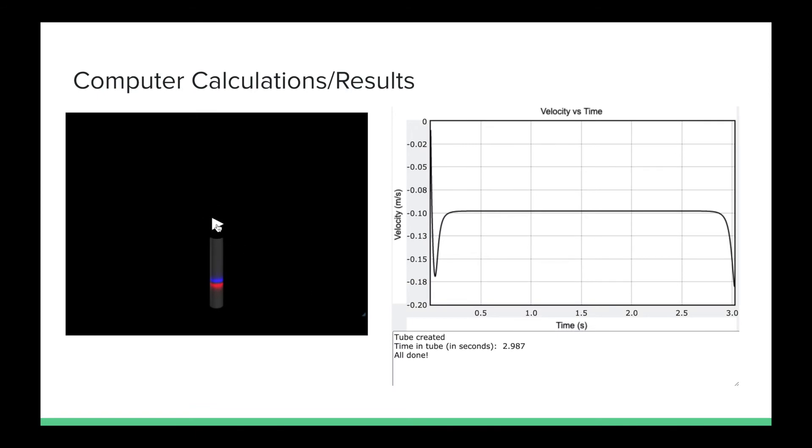The Glow script computer simulation is shown on the left, where the magnet is dropped through the tube. The graph on the right plots the velocity in relation to time, and the computational time for the magnet in the tube is calculated to be 2.987 seconds.